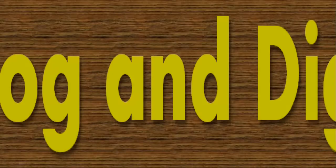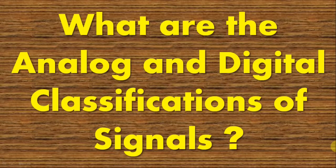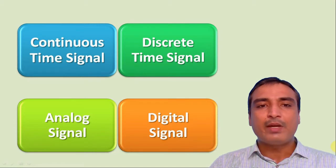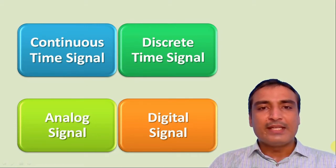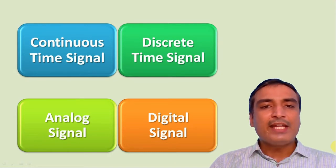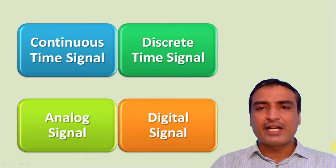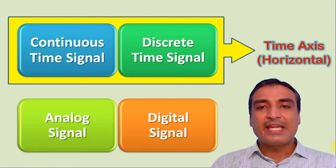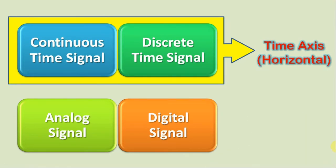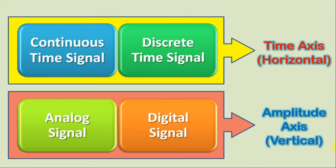The question is: what are the analog and digital classifications of the signals? Very often, the terms analog and digital are confused with that of Continuous Time and Discrete Time — if you presume likewise, then you are making a big mistake. The terms Continuous Time and Discrete Time qualify the nature of a signal along the time axis, or along the horizontal axis. On the other hand, the terms analog and digital qualify the nature of the signal along the amplitude axis, or along the vertical axis.